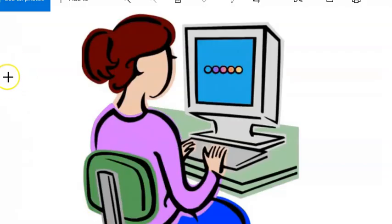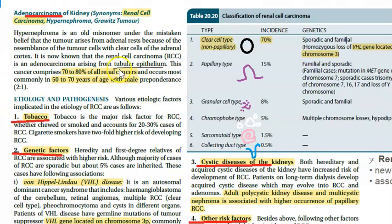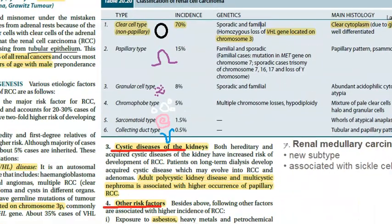Renal cell carcinoma is actually an adenocarcinoma of the kidney, arising from the tubular epithelium. It typically affects males around 50 years. Causes include tobacco, genetic factors, cystic disease of the kidney, and other factors like exposure to asbestos or cadmium, leather work, estrogen therapy in women, NSAIDs causing nephropathy, tuberous sclerosis, coffee, diabetes mellitus, and dialysis.